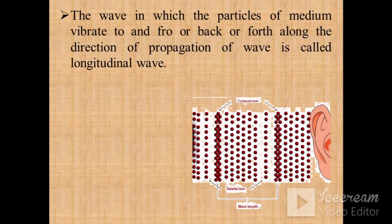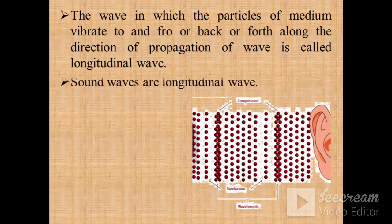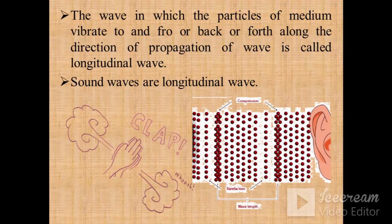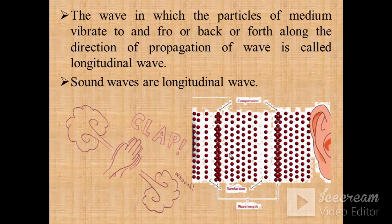A wave in which particles of the medium vibrate to and fro, back and forth, along the direction of propagation of the wave is called a longitudinal wave. Sound waves are longitudinal waves. As soon as sound is produced, the air near it gets compressed, then there is a rarefaction, then compression again — energy transfers from one particle to another through the air particles, vibrating along the direction of propagation.